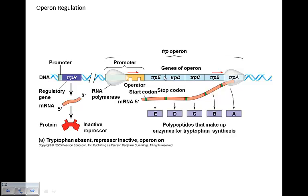So this is operon regulation. An operon is like an operator — think of it like an operator. It controls the RNA polymerase. The job of the RNA polymerase is to bind to the DNA, open it up, and start the transcription process, giving access to that DNA strand. The operon is part of the promoter region, located between the TATA box and the start codon.